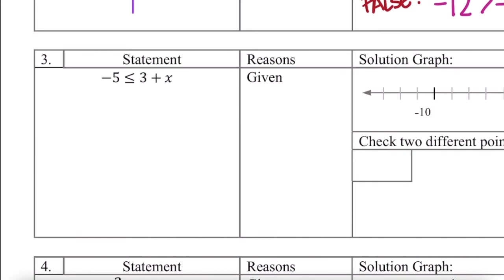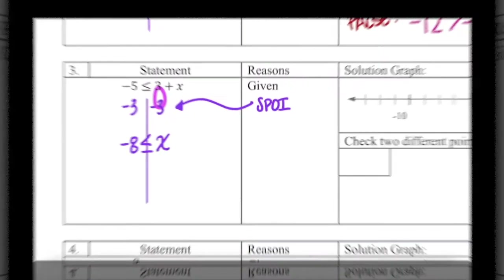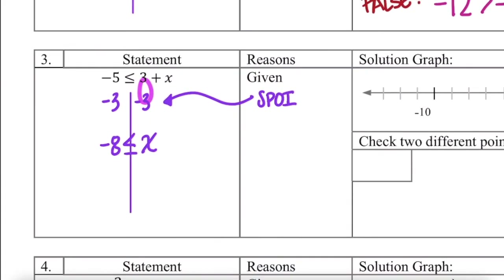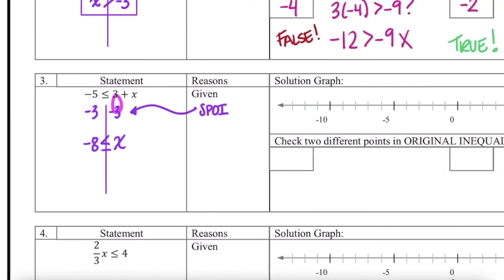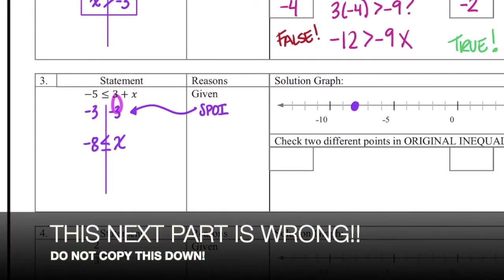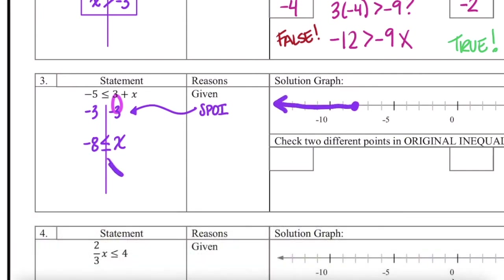Moving on to number 3 — go ahead and pause the video now so you can solve this one, and unpause when you're ready to graph. Did you get negative 8 is less than or equal to x? Coming over to our graph, here's negative 8, and since it's less than or equal to, I'm going to put my point directly on negative 8 and close it. Now I'm going to do this next part wrong, so do not under any circumstances copy down what I'm doing. What if I thought this graph was supposed to go to the left because I see 'less than' and less than means left?